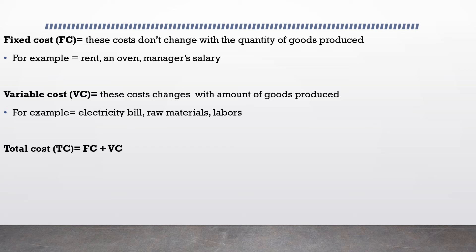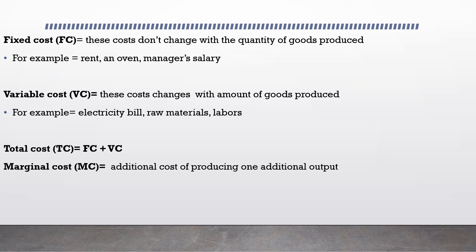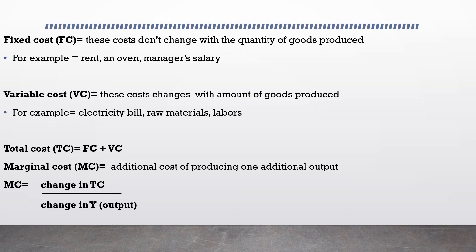Marginal means additional or extra, so marginal cost is the additional cost of producing one extra unit of output. For example, if you generally produce 10 units of cake, the marginal cost would be the additional cost of producing the 11th unit. In other words, marginal cost is how much your cost increases if you produce one extra unit. The formula is: marginal cost equals change in total cost divided by change in output or quantity produced.